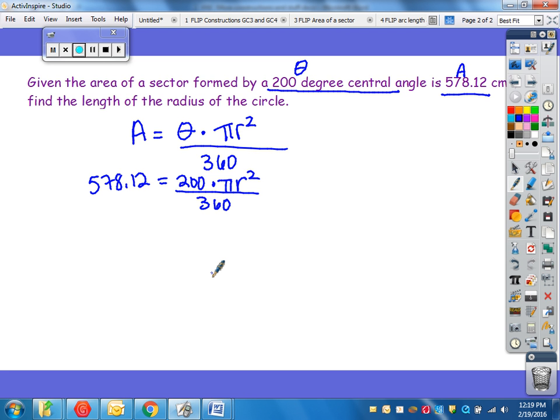All right, so we've got a fraction here, so I'm going to put this side over 1 and cross multiply. When I cross multiply, that gives me 360 multiplied by 578.12 equals, and I'm going to multiply 1 times this side.